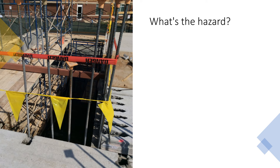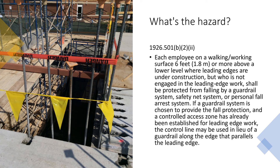Going up to the fourth floor, this is what the elevator shaft looked like. Not shown is the unfinished bottom of the shaft. While they are performing overhead bricklaying, there should still be at least a controlled access zone. OSHA says each employee on a walking-working surface six feet or more above a lower level where leading edges are under construction, but who is not engaged in the leading edge work, shall be protected from falling by a guardrail system, safety net system, or a personal fall arrest system. If a guardrail system is chosen and a controlled access zone has already been established for leading edge work, the control line may be used in lieu of a guardrail along the edge that parallels the leading edge.